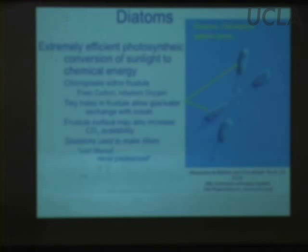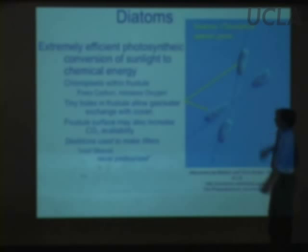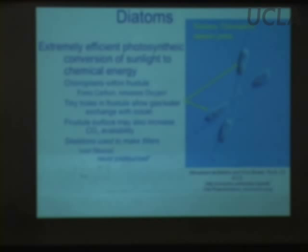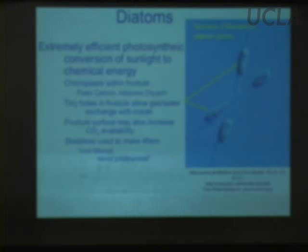Diatoms can be thought of as really photosynthesis engines — very good at harvesting sunlight and turning it into stored chemical energy. You can actually see this just by looking at them under a microscope. Here we have four individual diatoms, bowling-pin or rolling-pin shaped, and you can see they have these big chloroplasts — large organs that hold lots of chlorophyll. They're really optimized to make the most of the sunlight they get.